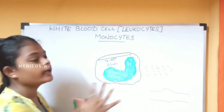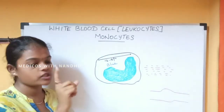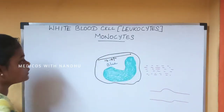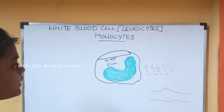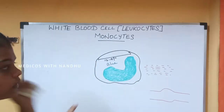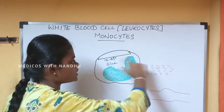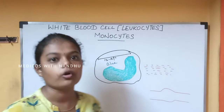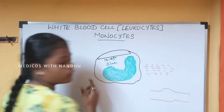Next, the agranulocyte WBC — that is the monocyte. The monocyte is a very large cell. The diameter of the monocyte is 12 to 18 micrometers. The nucleus is identified by a kidney-shaped structure or a horseshoe-shaped structure.